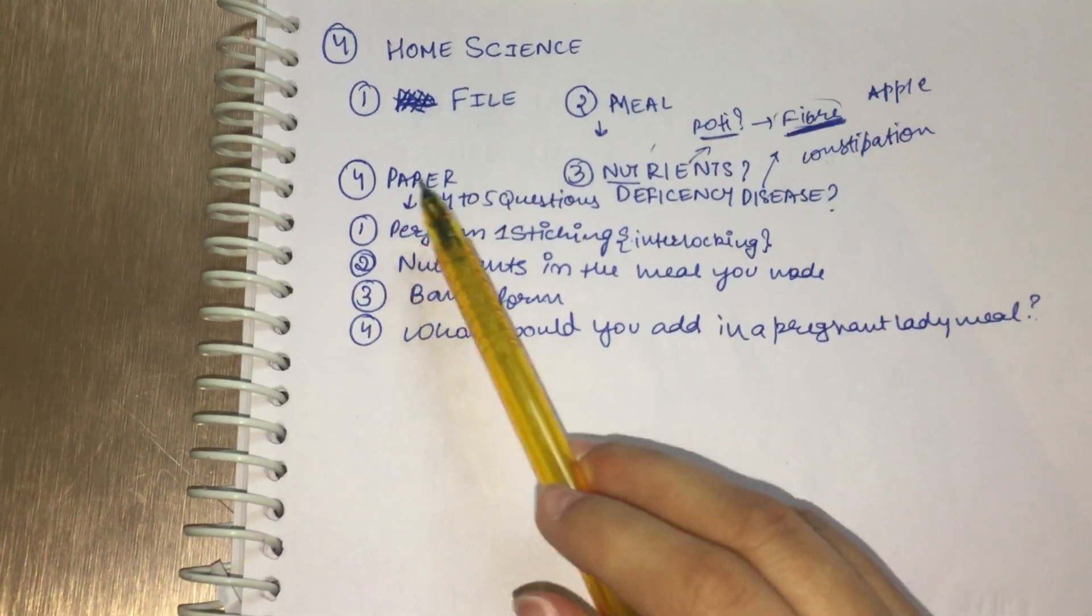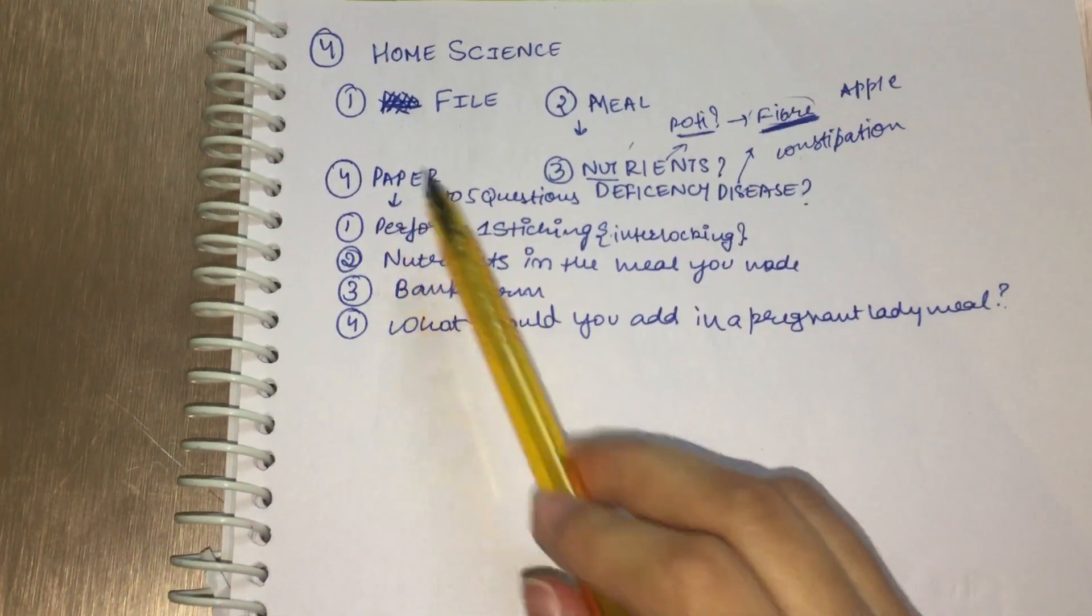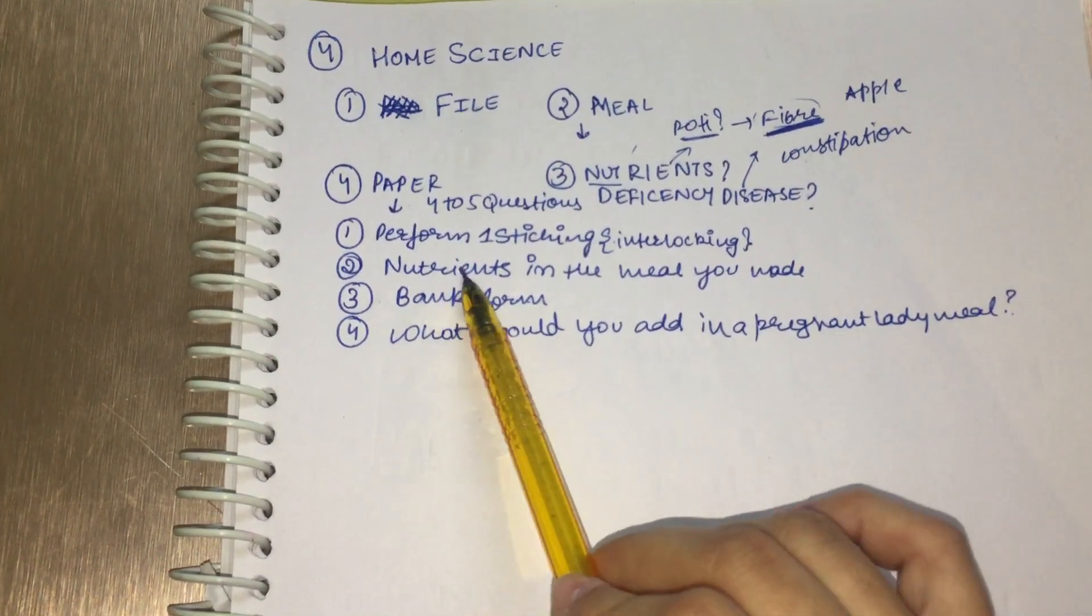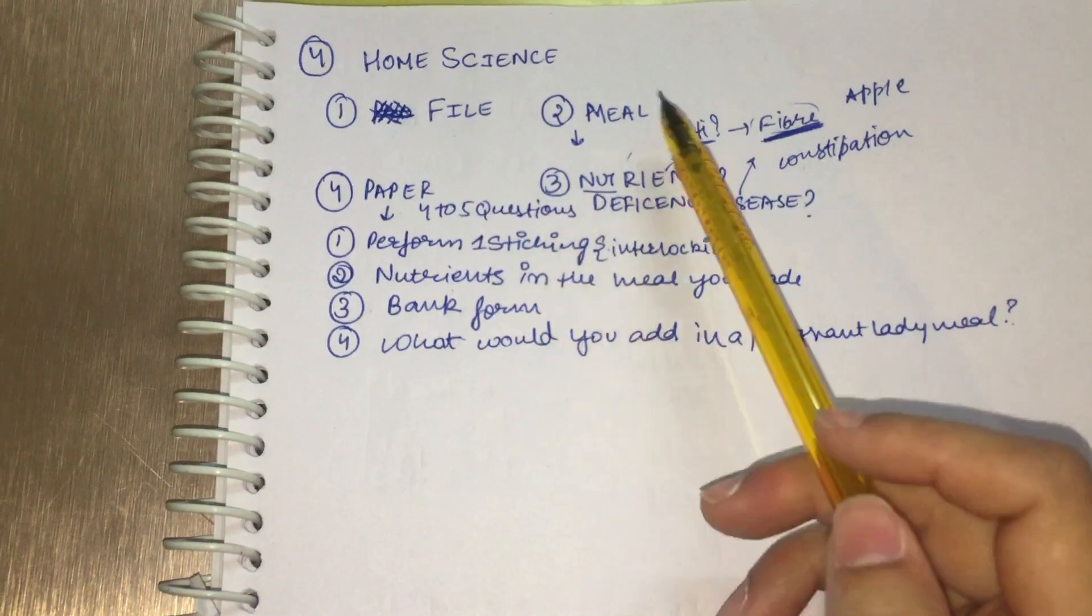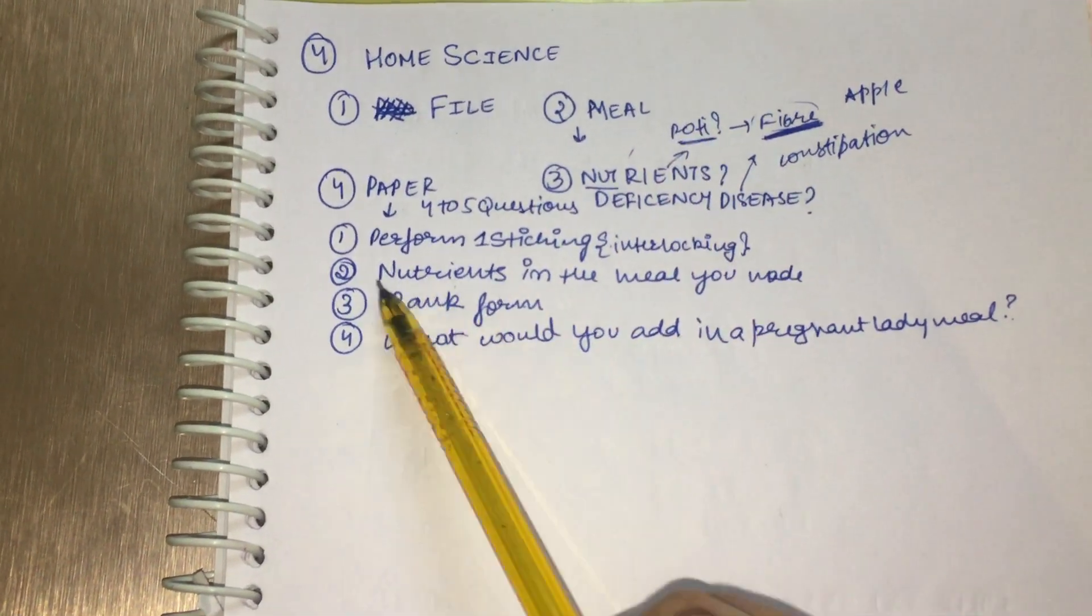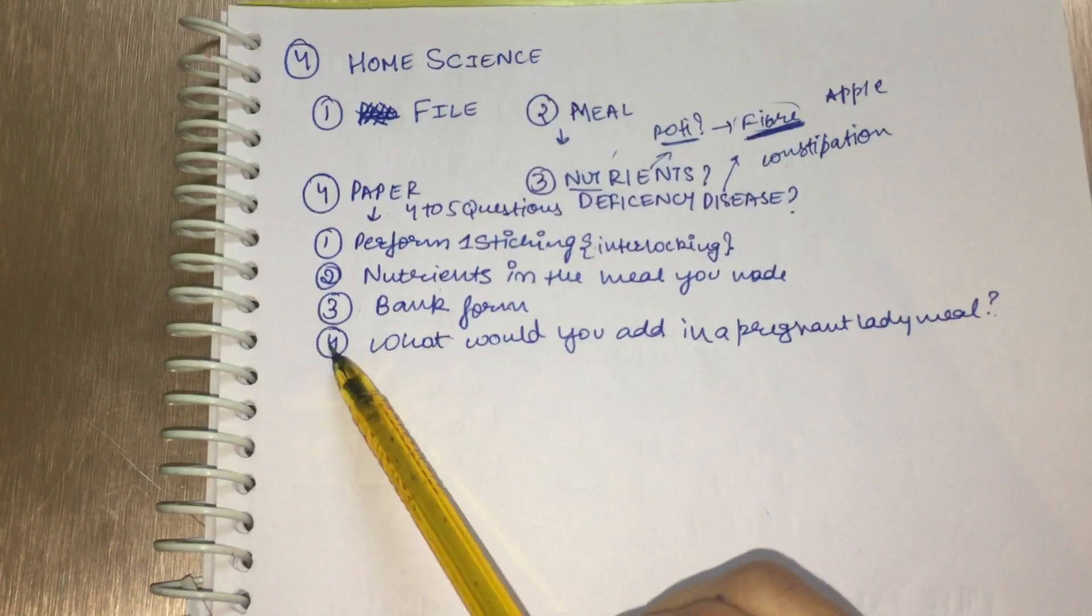You also have to write. There are going to be four to five questions in the paper. I think the second or third question was to write about the nutrients in the meal you have made. I made the meal for a pregnant lady, so I had to write all the nutrients in that.